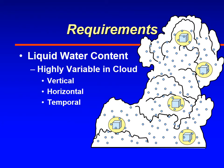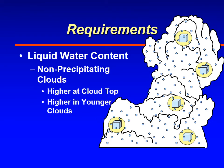Liquid water content is highly variable in cloud — both vertically, horizontally, and over time. Generally speaking, you tend to have much higher liquid water contents at the top of cloud, and also in clouds that are much younger. Older clouds tend to be made up of mostly ice crystals. This means that as you go through cloud top, either climbing out or descending into it, that's where you're going to get the most ice — right at cloud top, because that's where the clouds are the juiciest.